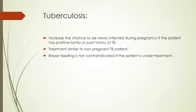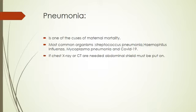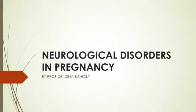Tuberculosis increases the chance of disease reactivation during pregnancy if the patient has a positive family history or positive past history of TB. Treatment is similar to non-pregnant TB patients and is not contraindicated. Pneumonia is one of the common causes of mortality in pregnant females. The most common organisms are Streptococcus pneumoniae, Haemophilus influenzae, Mycoplasma pneumoniae, and varicella especially in chickenpox. If chest X-ray or CT are needed, abdominal shielding must be used.